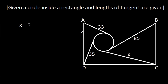In this video, we have been given a circle inside a rectangle. The length of the tangent on the circle from point A, B, C, and D is 33, 85, X, and 35. We have to find X.